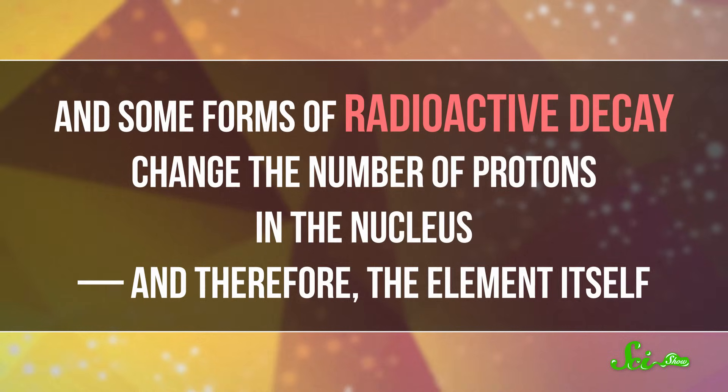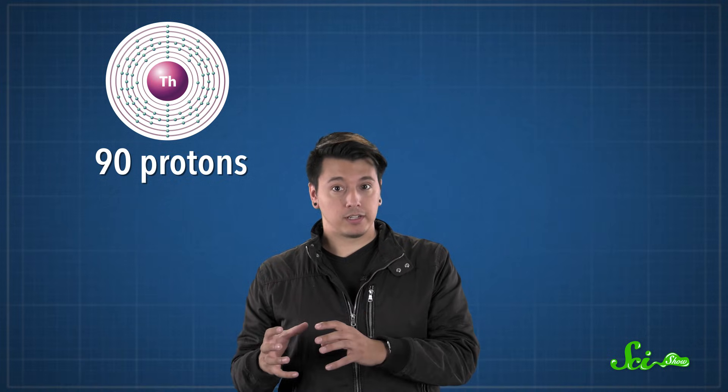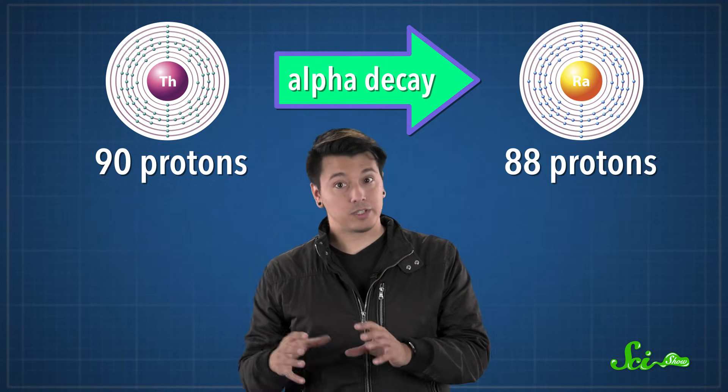And some forms of radioactive decay change the number of protons in the nucleus, and therefore, the element itself. In Soddy and Rutherford's lab, thorium, which has 90 protons, underwent alpha decay, losing two protons and turning into radium, which has 88 protons.